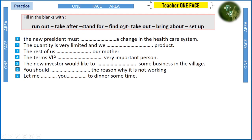Now let's go to practice: fill in the blanks with run out, take after, stand for, find out, take out, bring about, or set up. The first thing you're going to do is analyze each sentence and find the keywords or signal words that enable you to choose the correct phrasal verb. Scan the last part of the sentence first; if you don't find the keyword there, check the first part.